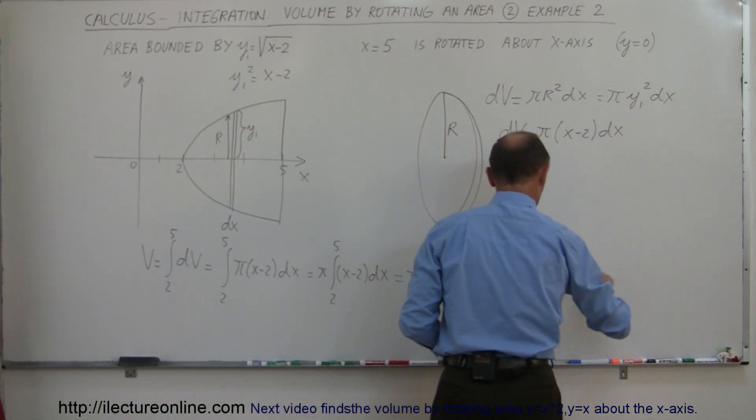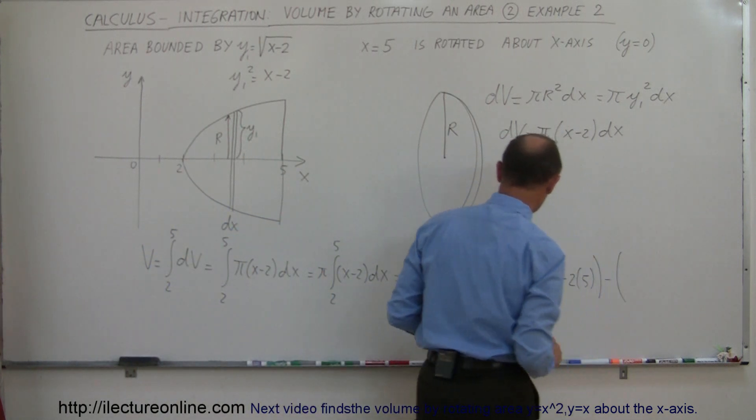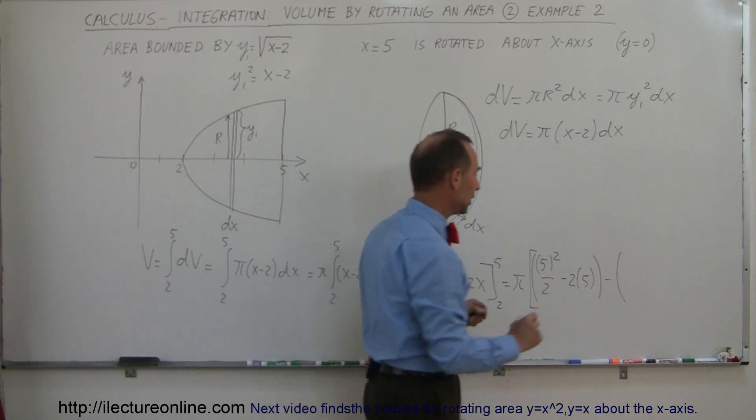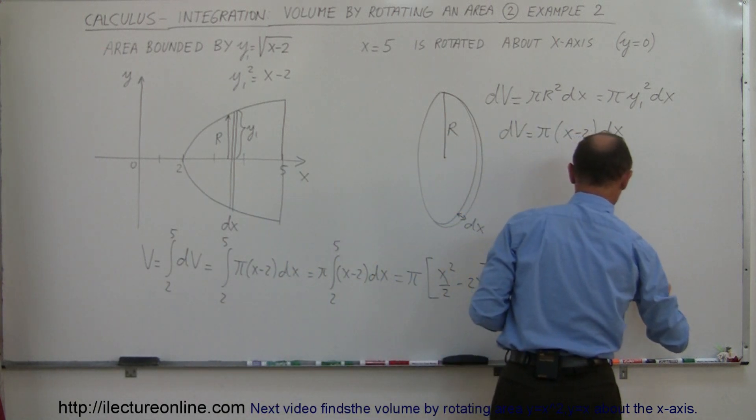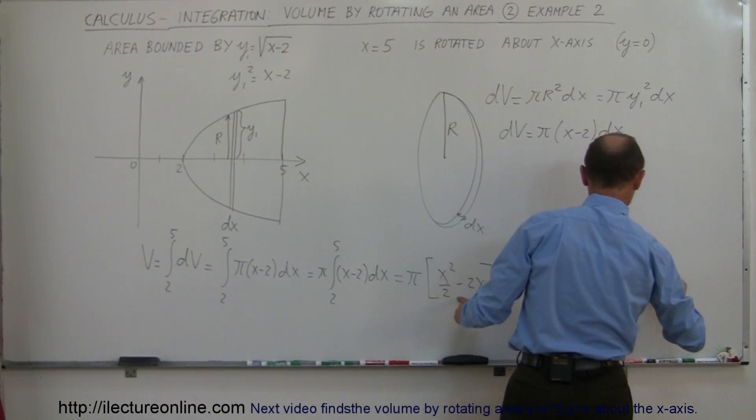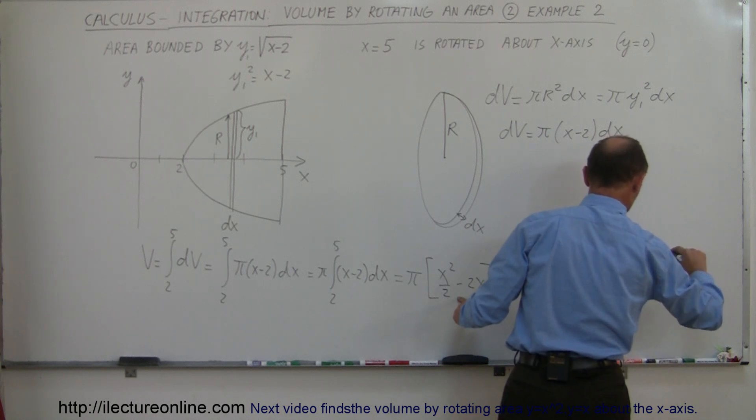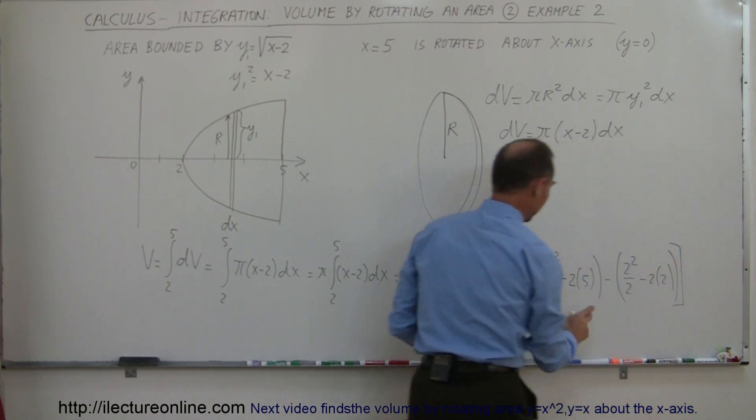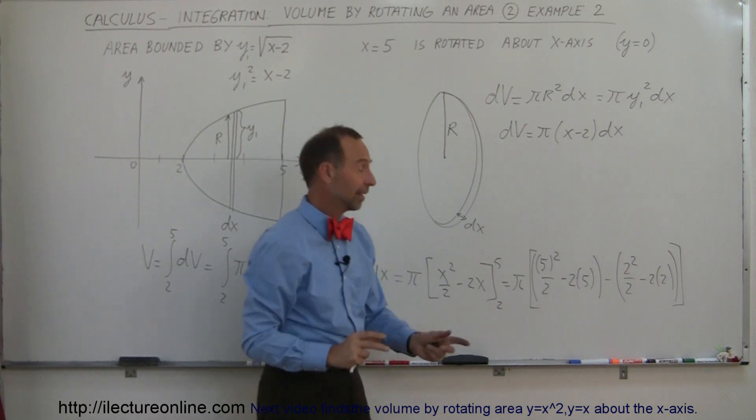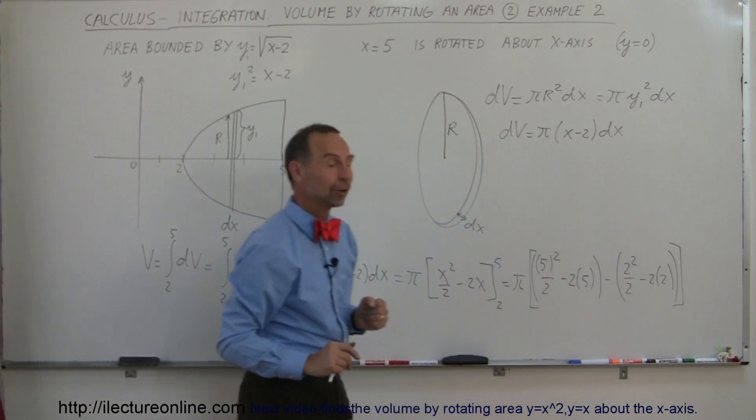I subtract from that when I plug in the lower limit. So let me put some parentheses around that. Minus, when I plug in the lower limit, I put a 2 in there. That would be 2 squared over 2, and that would be minus 2 times 2. So this is what I get when I plug in the upper limit, and this is what I get when I plug in the lower limit.